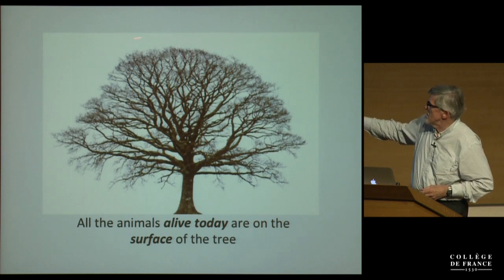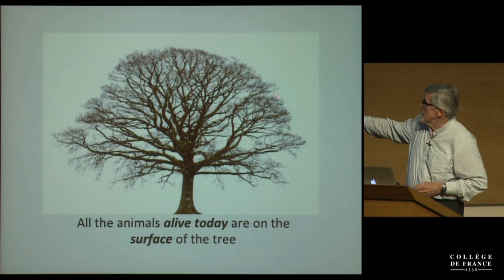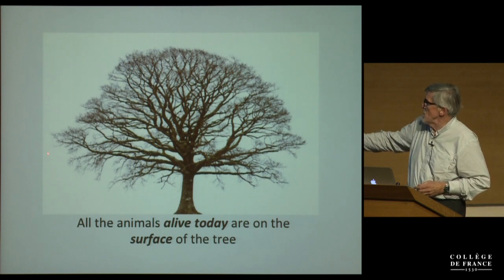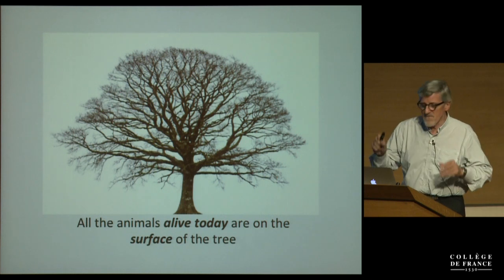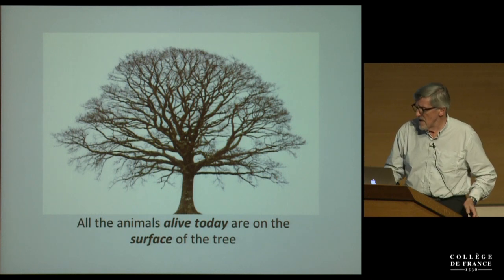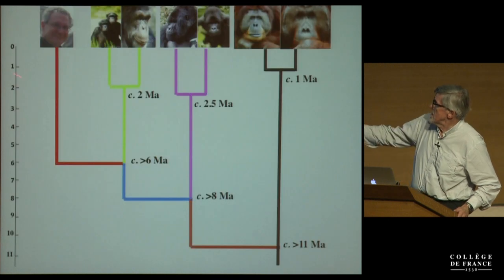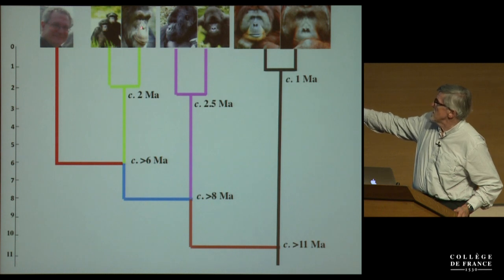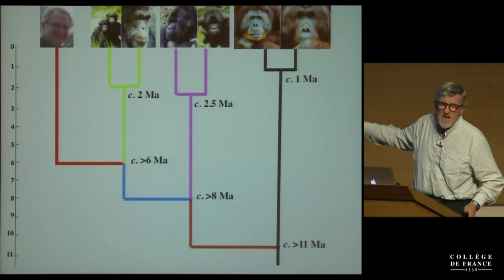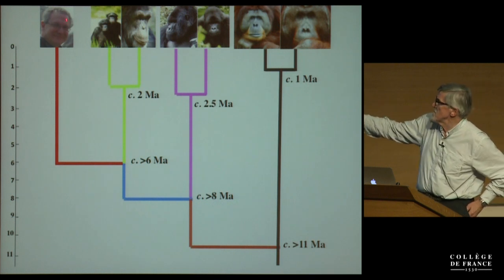This is a tree — it is a metaphor for all living things, and all living things are on the surface of the tree of life. This is modern humans in the form of Jean-Jacques Hublin, and these are our closest living relatives. So these creatures are all on the surface of the tree of life.